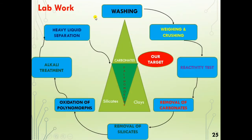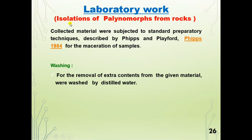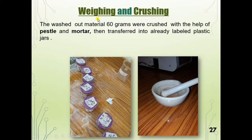This slide shows the experimental design and lab work. For isolation of palynomorphs from rocks, we applied the technique described by Phipps and Playford. For maceration of samples, the steps involved are: first, washing — material was washed with distilled water. Then weighing and crushing — we took 60 grams of each sample and crushed it with a pestle and mortar. Material was then transferred into labelled plastic jars.